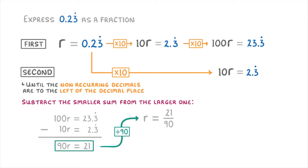And we should always check if we can simplify our answer, which in this case we can by dividing top and bottom by 3 to get 7 over 30. And that's it, we've turned 0.23 recurring into a fraction.